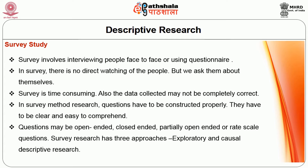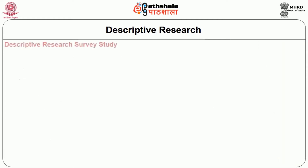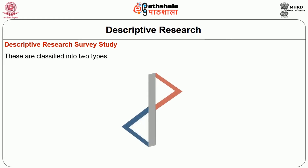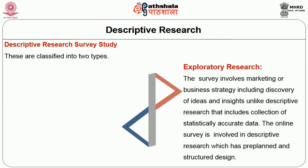Survey research has three approaches: exploratory, causal and descriptive research. Descriptive research is also classified as a type of survey in general, the other two being exploratory research and causal research. In survey involving exploratory research, the survey involves marketing or business strategy including discovery of ideas and insights, unlike descriptive research that includes collection of statistically accurate data. The bulk of online survey is involved in descriptive research, which has a pre-planned and structured design.